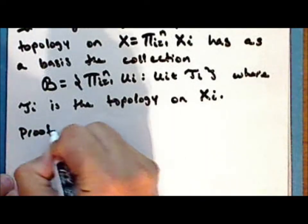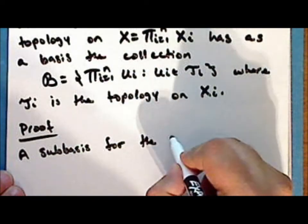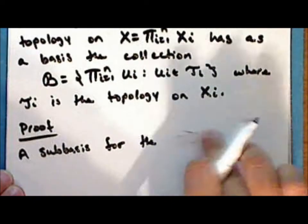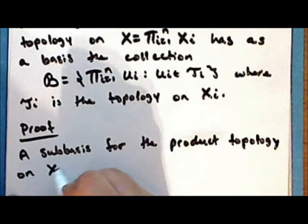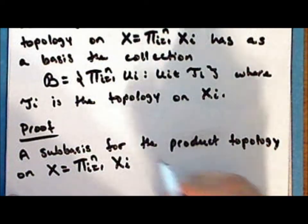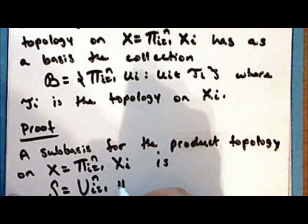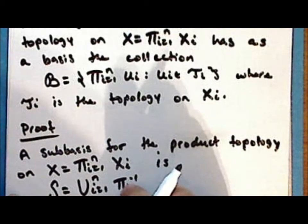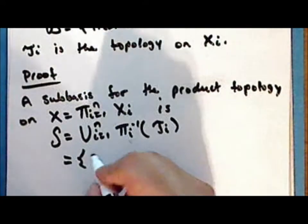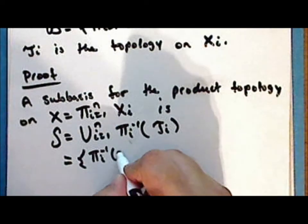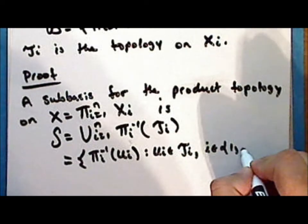Proof: A sub-basis for the product topology on the product set is the collection script S, consisting of the union of the inverse images under the projection map pi sub i of the sets U sub i, where U sub i is in the topology tau sub i, and i is an index in the finite set from 1 to n.